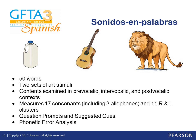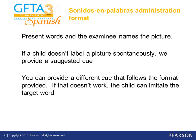If the individual doesn't produce the target word after two question prompts, you can use the suggested cue to elicit the target word. Completing the phonetic error analysis table provides a way to easily see the error patterns by phoneme and syllable position. After completing the Sonidos en Palabras test, you can obtain norm-referenced scores, standard scores, percentile ranks, age equivalents, and growth scale values.